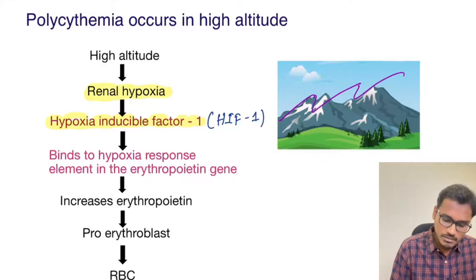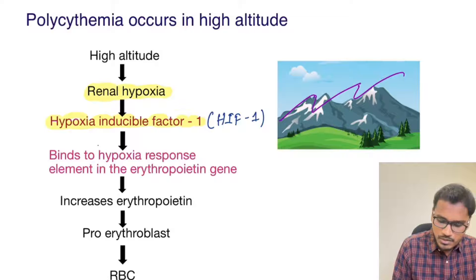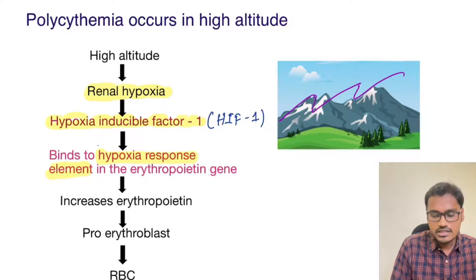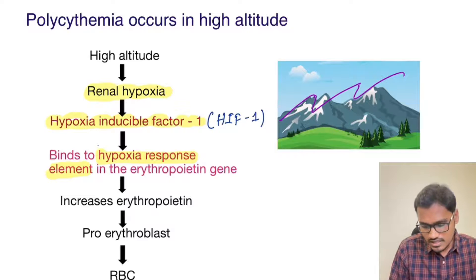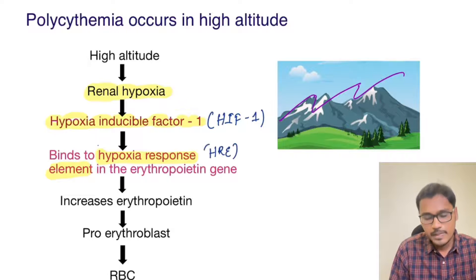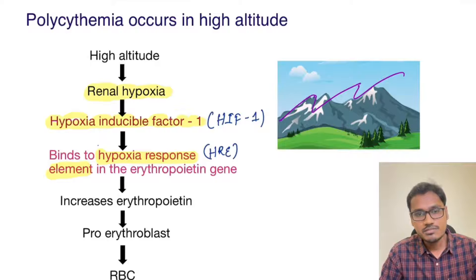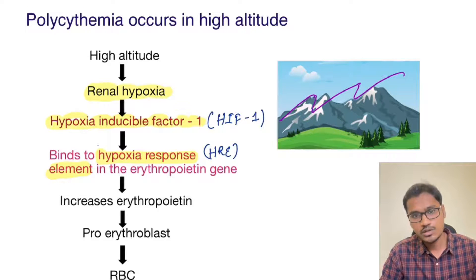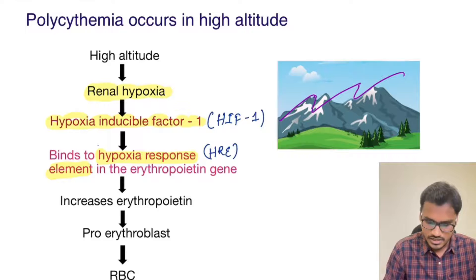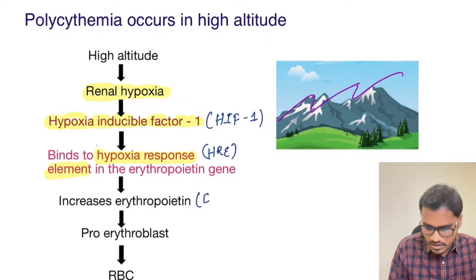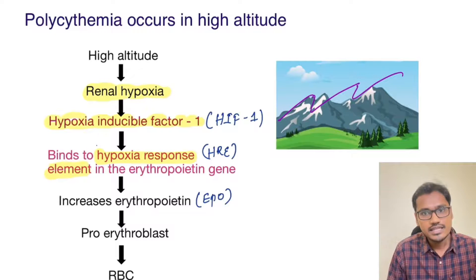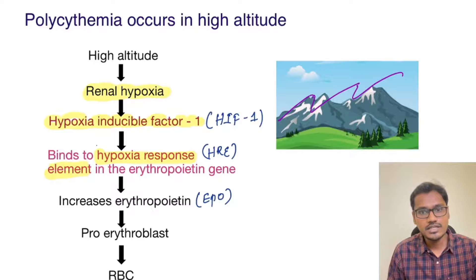Once Hypoxia Inducible Factor is induced, it will go and bind to the Hypoxia Response Element — an element in the erythropoietin gene. This Hypoxia Response Element will then stimulate erythropoietin production.